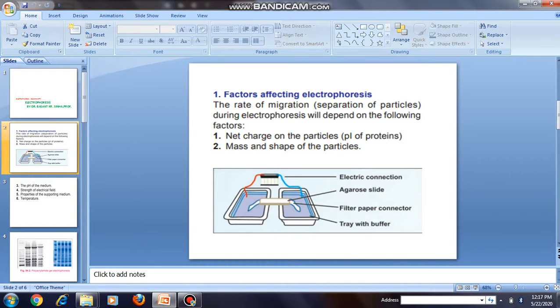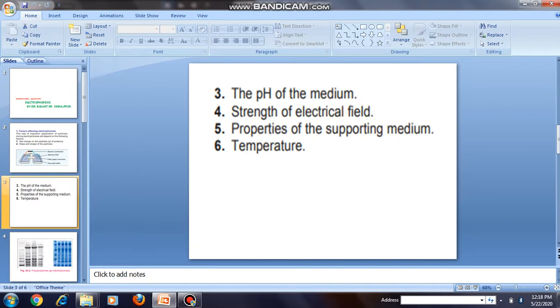There are few factors which affect electrophoresis. The rate of migration of proteins depends on following factors: first, net charge on the protein particles, i.e., PI of protein; second, mass and shape of the particles; third, the pH of the medium; fourth, strength of the electric field; fifth, properties of the supporting medium; and sixth, temperature.